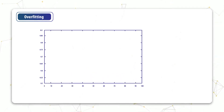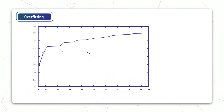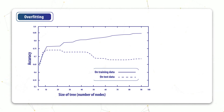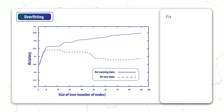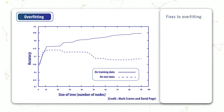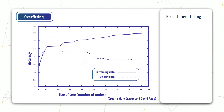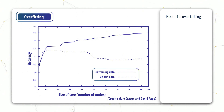This chart shows the accuracy of a tree as the size of the tree increases. We can see that overfitting begins when the size of the tree surpasses around ten nodes or so. Overfitting occurs when a model is so complex that it ends up fitting the noise in the dataset, so to reduce overfitting we need to find ways of reducing the complexity of the tree, which means reducing the number of nodes.